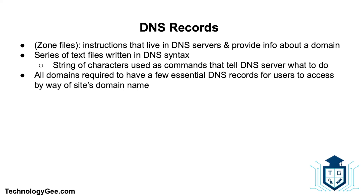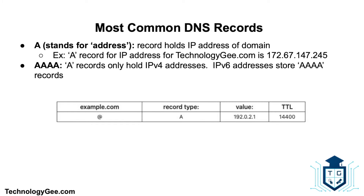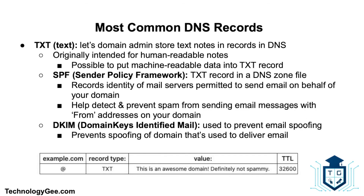The first common DNS record is the A record, where A stands for address. This record holds the IPv4 address of a domain name — for example, the A record for technologyg.com is 172.67.147.245. Then we have the AAAA record: while A records hold IPv4 addresses, AAAA records store IPv6 addresses.